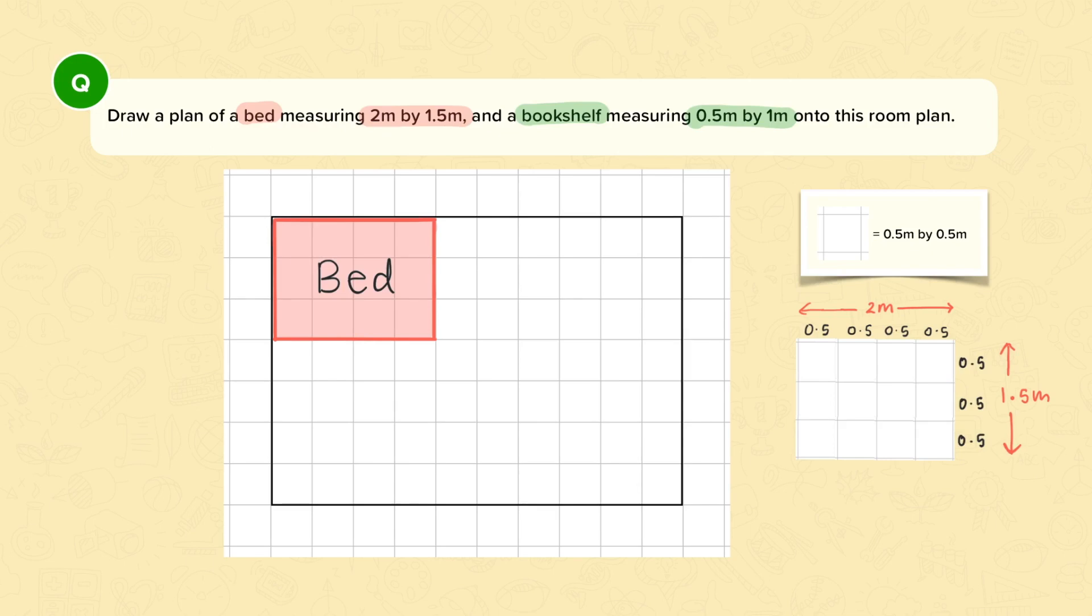If I wanted to do this without having to draw it out, I would need to work out how many 0.5s there are in 2. So then I could do 2 divided by 0.5, which tells me there's 4 squares in that direction, and then 1.5 divided by 0.5 tells me there's 3 lots of 0.5 in the other direction, so that's 3 squares.